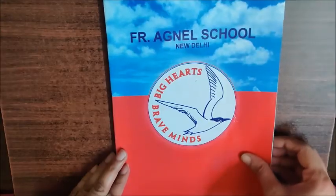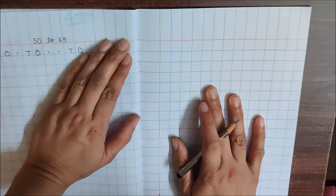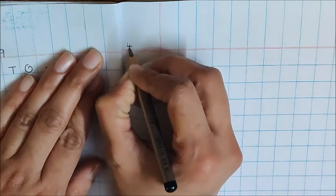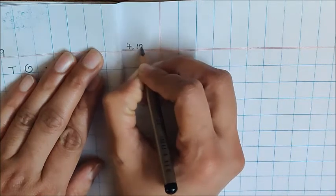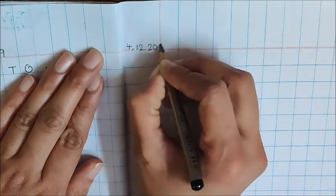Now, take your maths notebook. Open a new page. Write down today's date. Today is December 4. 4 dot, 12 dot, 20, 20.